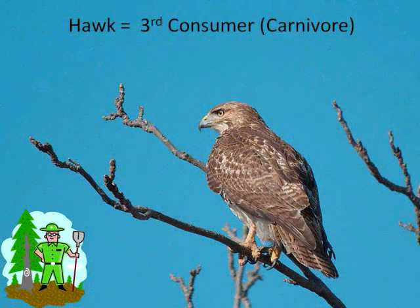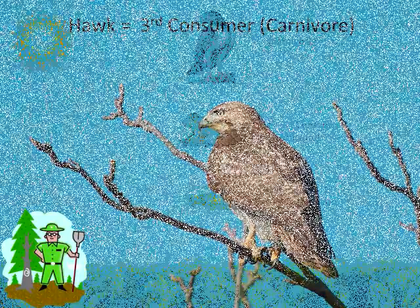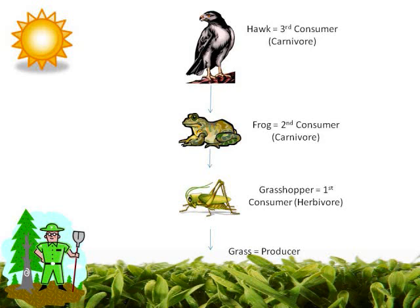After Mr. Frog eats, he is spotted in the distance by Mr. Hawk. Mr. Hawk then swooped in to eat or consume Mr. Frog. This makes Mr. Hawk both a carnivore and our third consumer. He is the third animal to eat in our food chain. He is also the last animal to eat in our food chain, which makes him the top of the food chain in our example. So let's take a quick look at how this food chain developed.